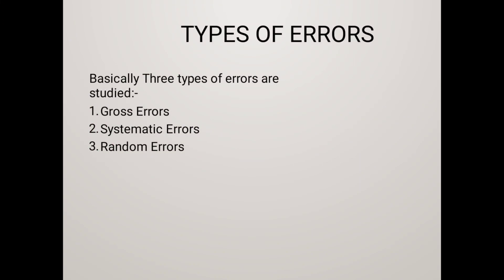Types of Error: Gross Error, Systematic Error, and Random Error. The error is defined as the difference between the true value of the variable and the value indicated by the instrument. The static error may occur due to a number of reasons.